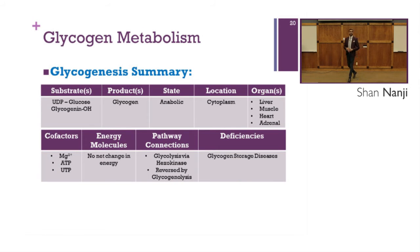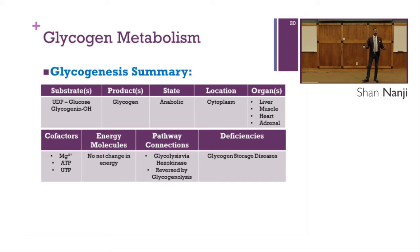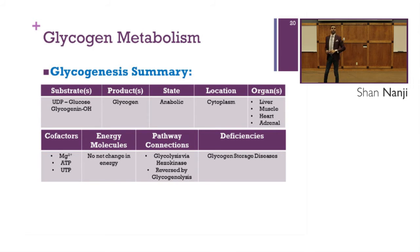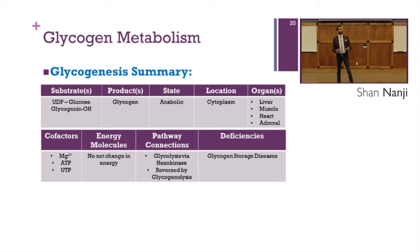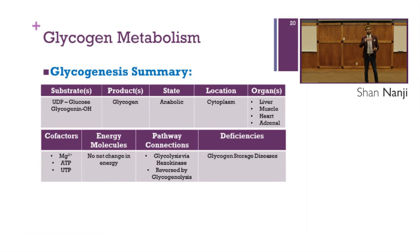Summary of glycogenesis: the substrates are UDP-glucose and glycogenin-OH, and the product is glycogen. This occurs in the anabolic state, in the cytoplasm, in four organs: the liver, muscle, heart, and adrenals. The cofactors required are magnesium, ATP, and UTP, with no net change in energy. Pathway connections include glycolysis via hexokinase, reversed by glycogenolysis. Deficiencies lead to glycogen storage diseases.